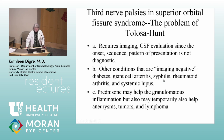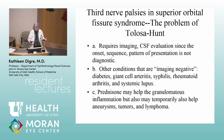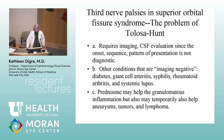The problem of Tolosa-Hunt is it absolutely requires imaging. You often have to do a CSF examination. Even if imaging is negative, you've got to think of other things. Diabetes can mimic this because of the pain. Giant cell arteritis, syphilis, rheumatoid arthritis, and systemic lupus are all in the differential. Prednisone is the treatment for true Tolosa-Hunt, which is an idiopathic inflammatory condition of the posterior orbit or cavernous sinus. But Tolosa-Hunt is extremely difficult and you always have to work it up.